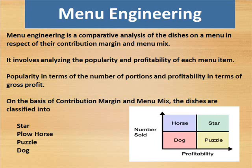Menu engineering is a comparative analysis of the dishes on a menu in respect of their contribution margin and menu mix. It involves analyzing the popularity and profitability of each menu item — popularity in terms of the number of portions and profitability in terms of gross profit. On the basis of contribution margin and menu mix, the dishes are classified into star, plow horse, puzzle, and dog.